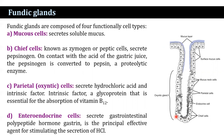Pepsinogen is converted to pepsin, which is a proteolytic enzyme. Third, parietal cells, also known as oxyntic cells, that secrete hydrochloric acid and intrinsic factor. Intrinsic factor is a glycoprotein essential for the absorption of vitamin B12. And the fourth type, enteroendocrine cells, that secrete the gastrointestinal polypeptide hormone gastrin, which is the principal effective agent for stimulating the secretion of hydrochloric acid.